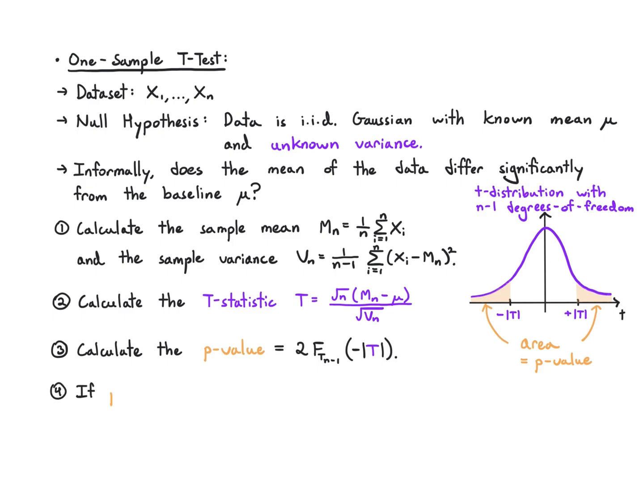Finally, we get a p-value. If it's less than alpha, we set that threshold in advance, we reject the null. If it's greater than or equal to alpha, we fail to reject the null.